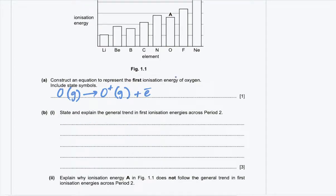Part B1: state and explain the general trend in first ionization energies across period 2. The number of electrons and protons is increasing across a period. As they increase, the nuclear attraction for valence electrons increases, causing an increase in ionization energy across the period. The effect of shielding remains constant throughout, only increasing when the number of shells increases.